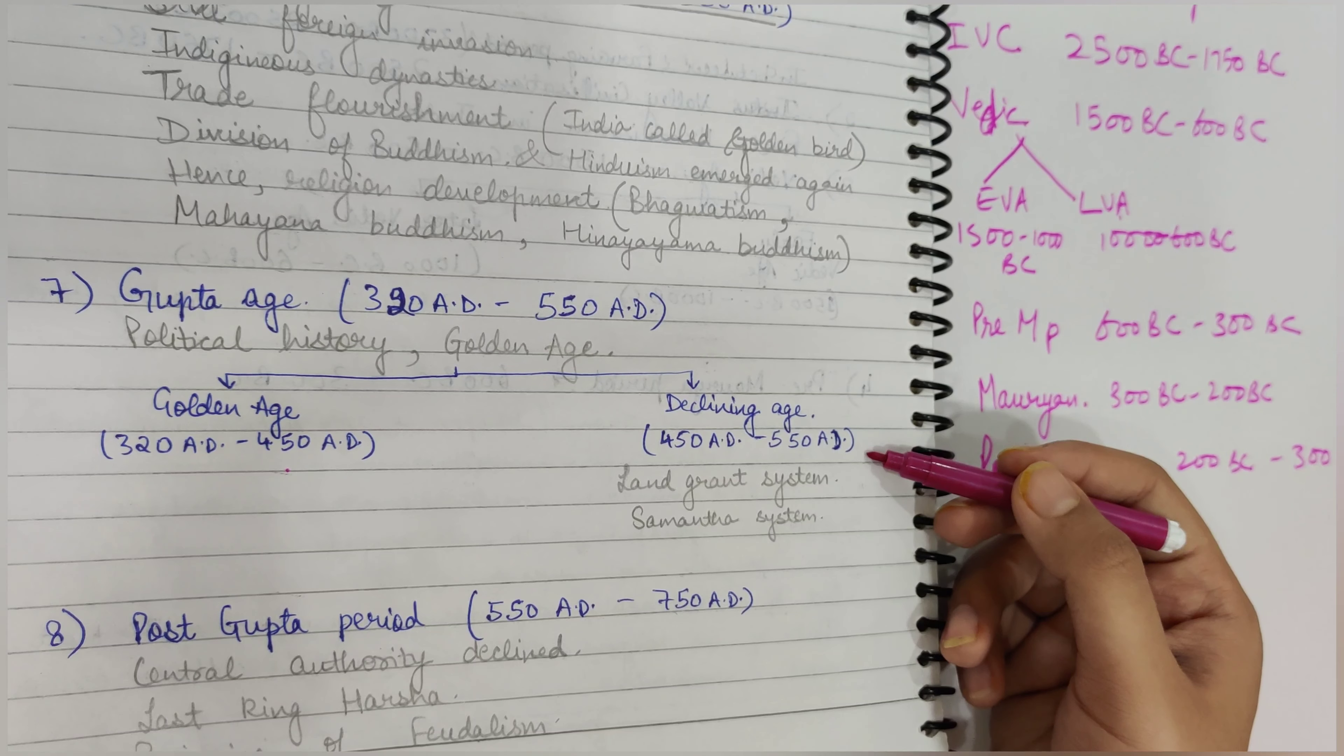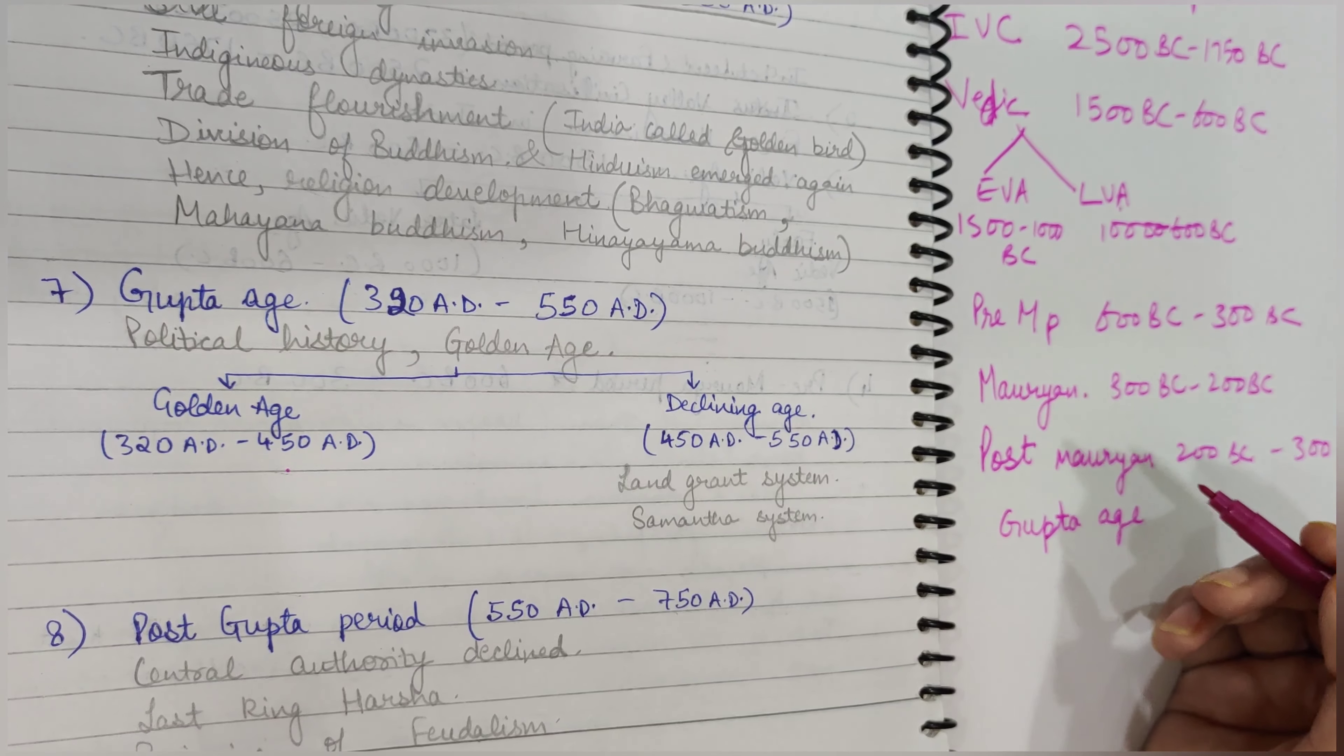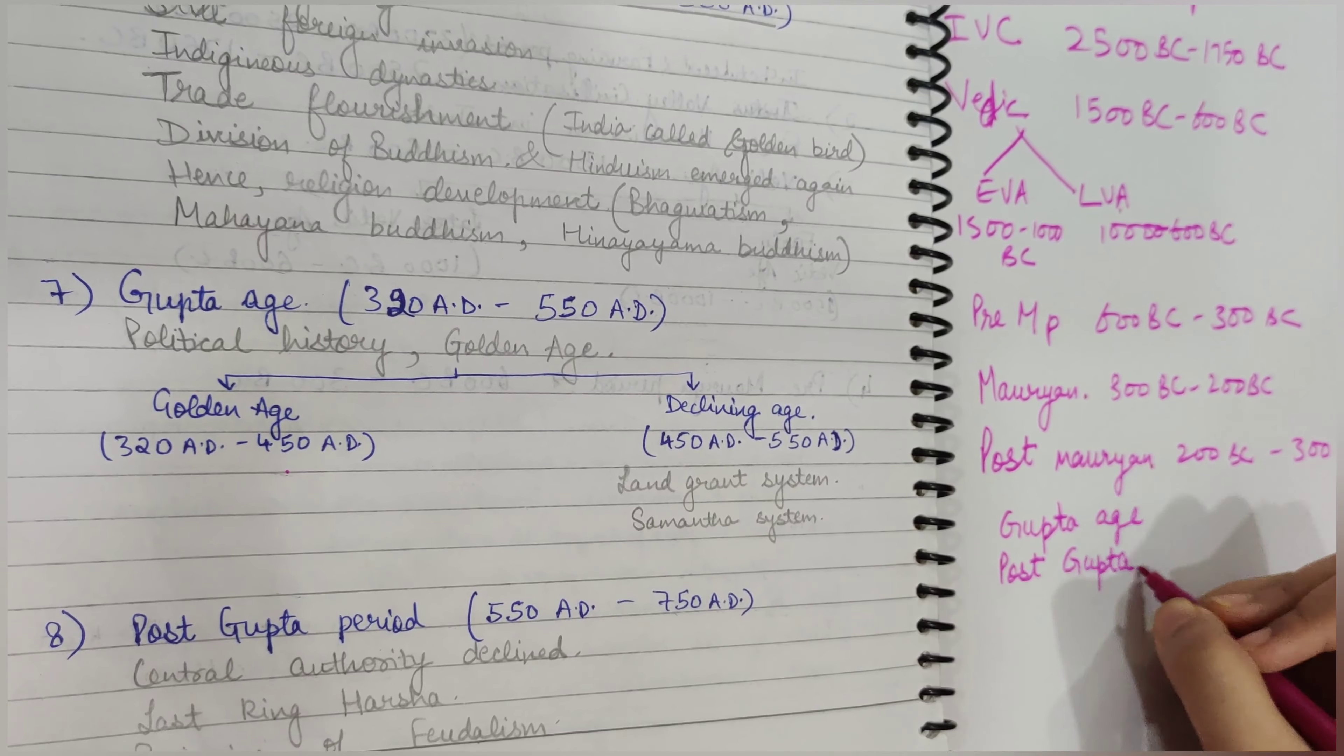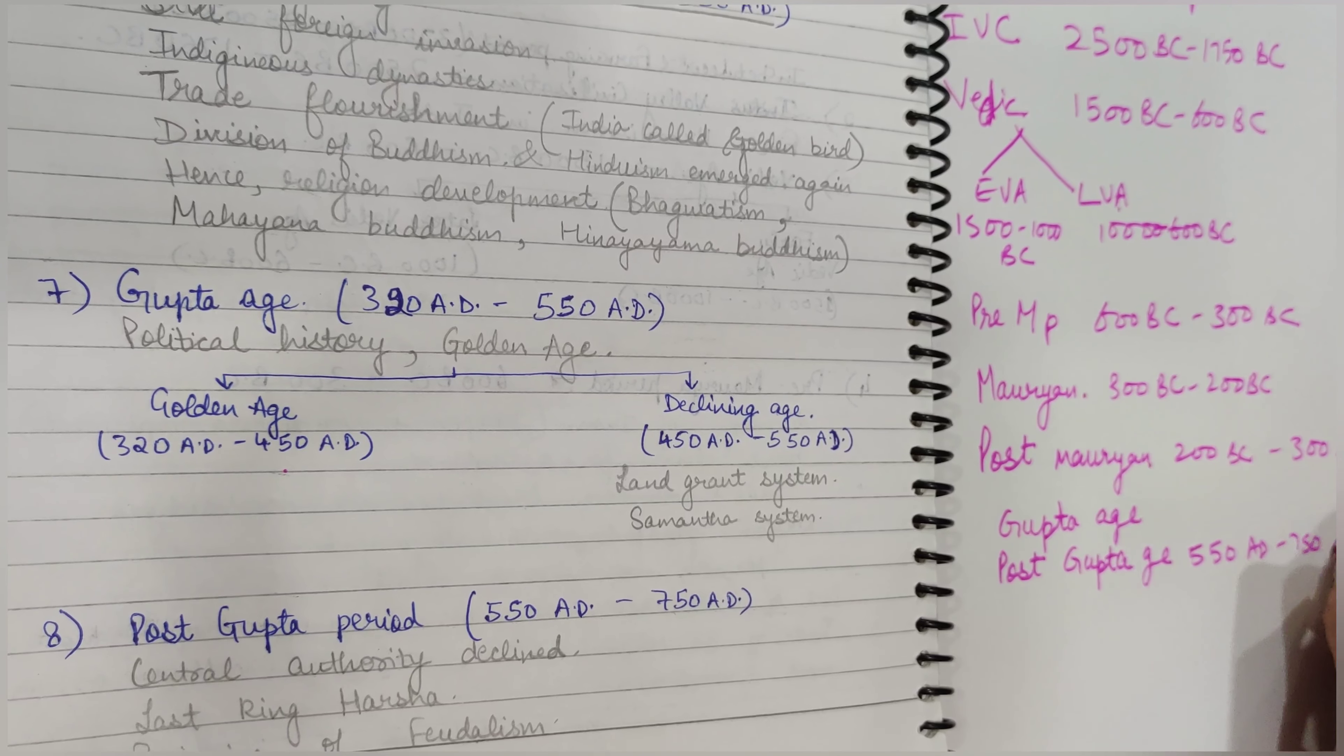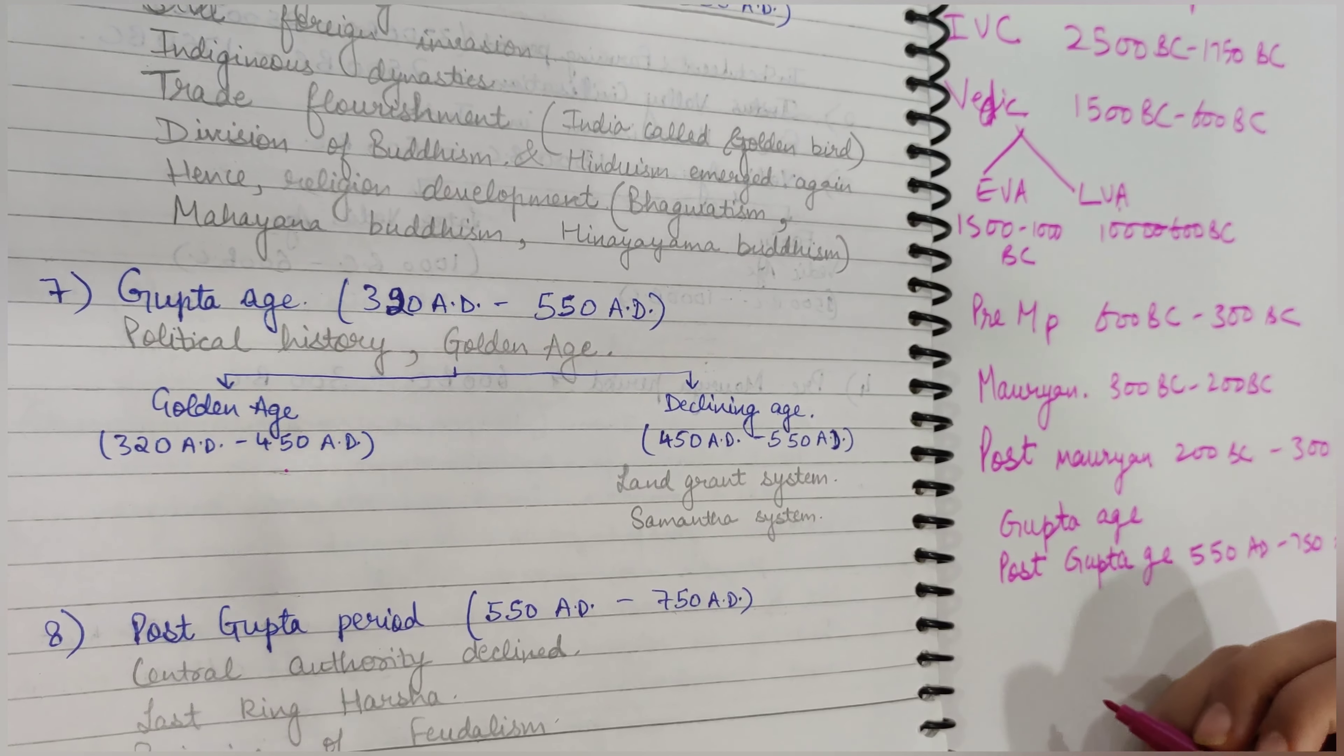Then comes the declining age. In further chapters, we'll know in detail why all this happened. After this comes Post-Gupta Age, which is from 550 AD to 750 AD. What happened in this is that central authority declined, and the last king was Harsha.